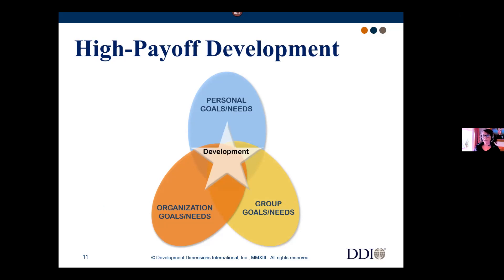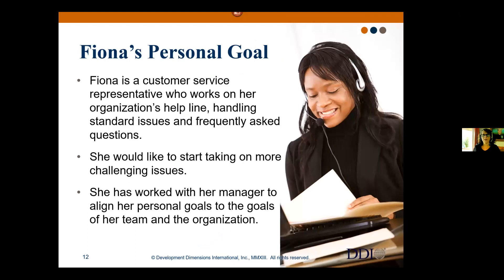Group goals represent your team's goals and needs, and then there are the organization's goals and needs. When people agree that development is truly important, they'll execute their development plan while ensuring it's aligned to all three — personal, group, and organizational. That's why the development star in the middle touches all three circles.